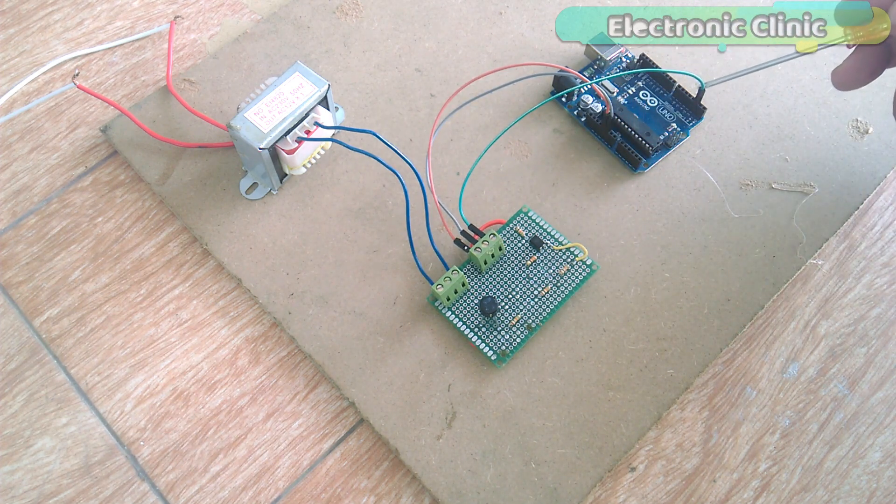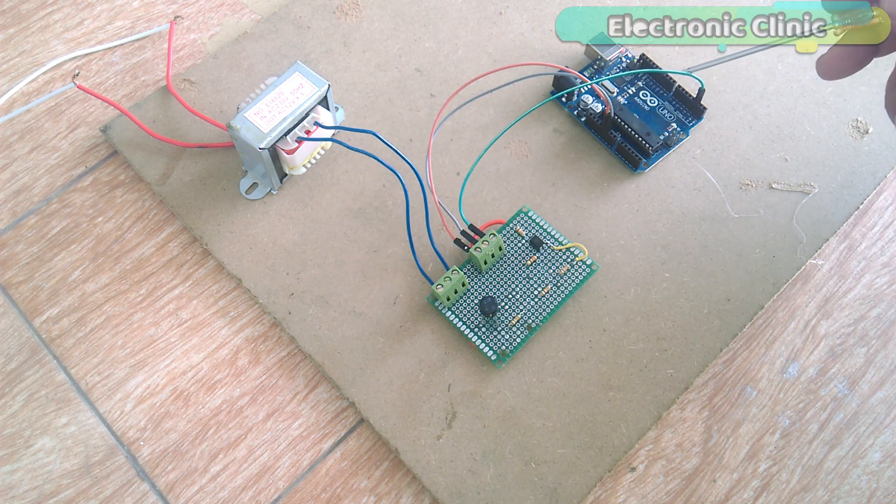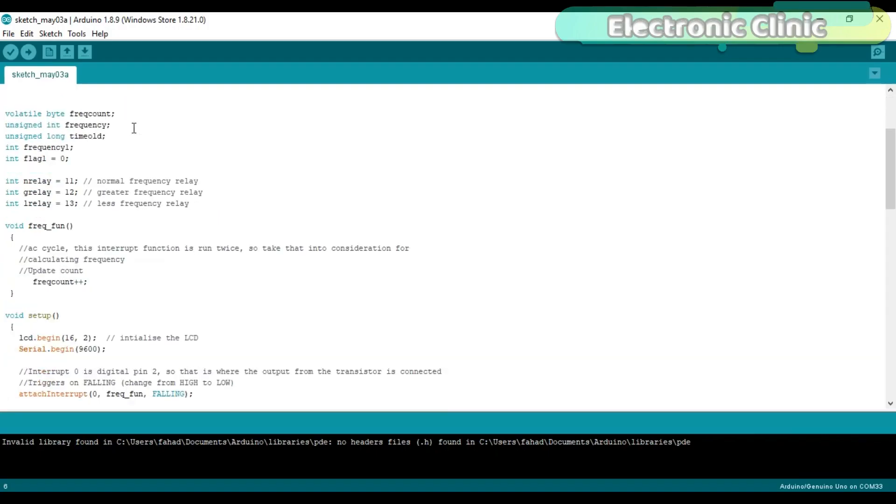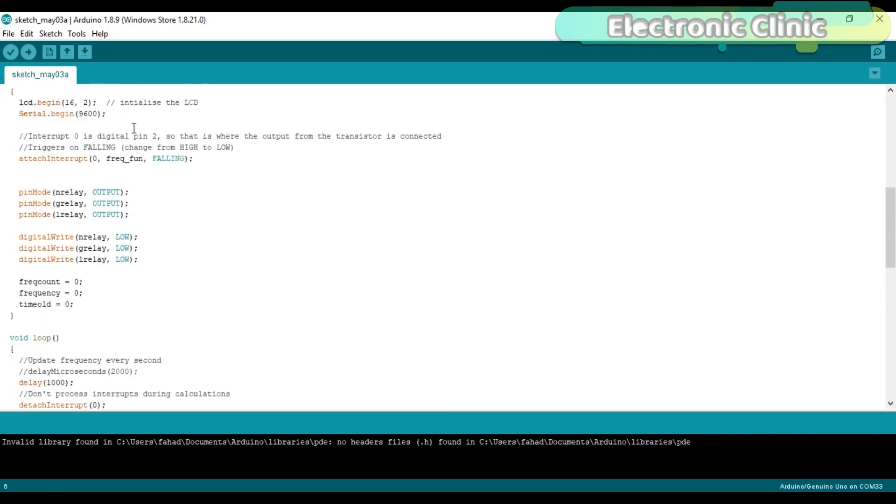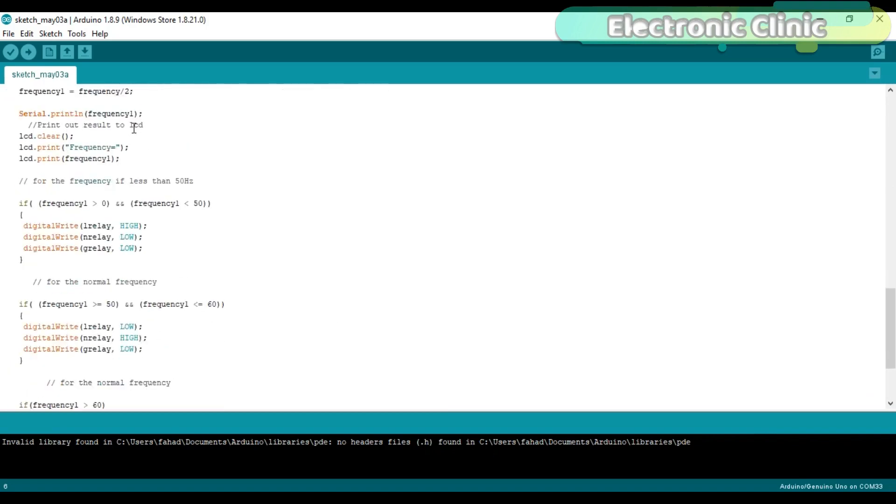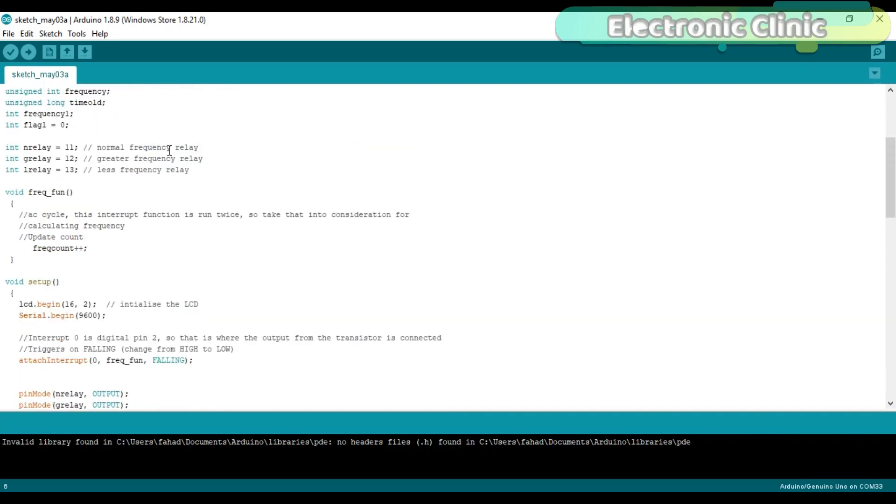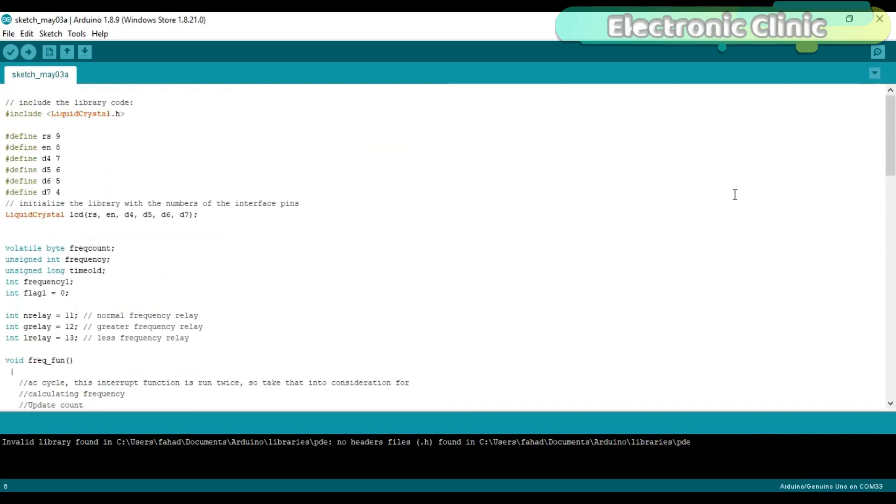Now let's discuss the Arduino programming. This is the same program which I used in version 1 of the mains frequency monitoring system. And as I said earlier that in version 2 the modification is only on the hardware side while the program remains the same. So for the best understanding I recommend you should watch version 1 of the mains frequency monitoring system. I will provide a link in the description.